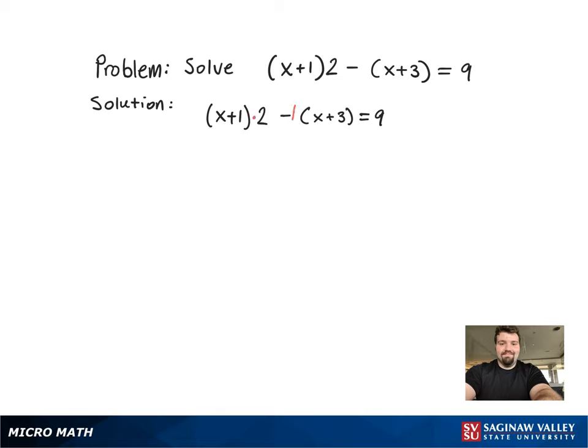Since the 2 is being multiplied by the quantity x plus 1, and negative 1 is being multiplied by the quantity x plus 3, and they don't interfere with each other, we can go ahead and distribute them at the same time, respectively.